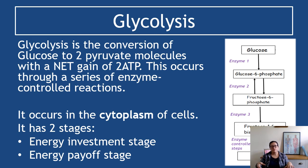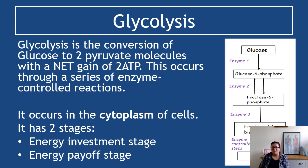Glycolysis is the conversion of glucose to two pyruvate molecules with a net gain of two ATP — that is not new knowledge for you, you already know it from National 5. It occurs through a series of enzyme-controlled reactions in the cytoplasm of cells. It has two stages: the energy investment stage and the energy payoff stage. Those bits are new. We're going to focus on what is happening in each of those two stages.